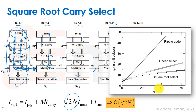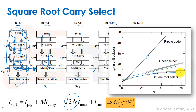Looking at the complexity comparisons: the ripple carry adder has a large linear propagation delay rising steeply with n; the carry select and carry skip adders are both linear but with a much slower slope; and the square root carry select has a square-root-type dependence, which is a significantly better approach.